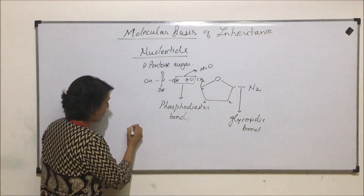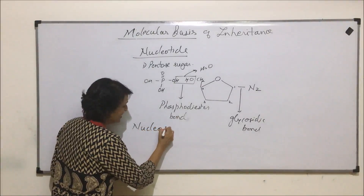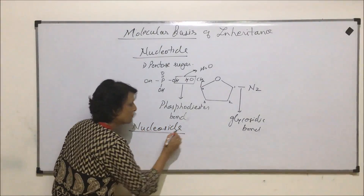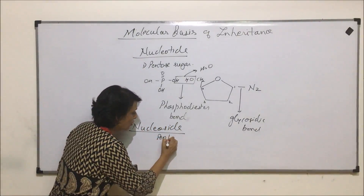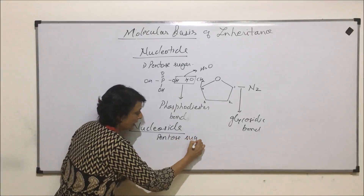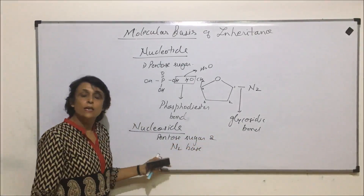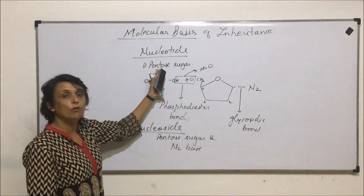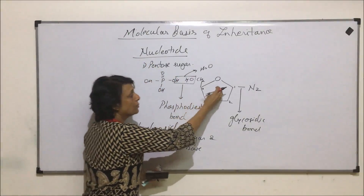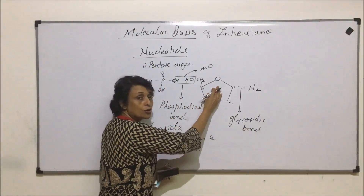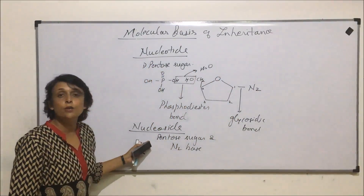If we talk of another molecule known as a nucleoside: a nucleoside is a molecule which has a pentose sugar and a nitrogen base. That means nucleoside is nucleotide minus phosphate. If we remove the phosphoric acid, the molecule which remains — pentose sugar and nitrogen base without phosphoric acid — we call it a nucleoside.